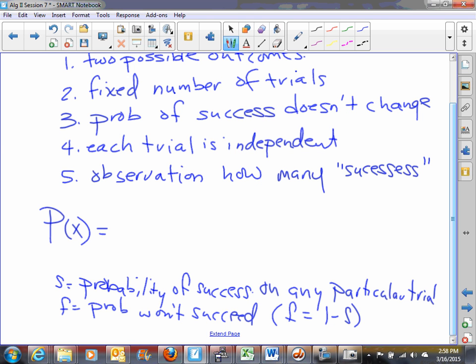Now, the formula p of x, if there are n is the number of trials and you want x to be the number of successes, is equal to n choose x times s to the x times f to the n minus x. And this will give you the probability of exactly x successes in this experiment in n trials.